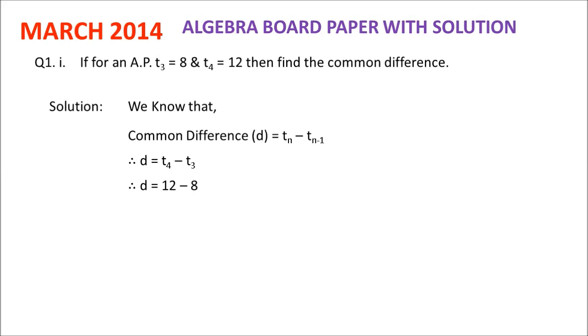Therefore, D is equal to the 4th term that is 12 minus the 3rd term that is 8. And therefore, D is equal to 12 minus 8, that is 4.